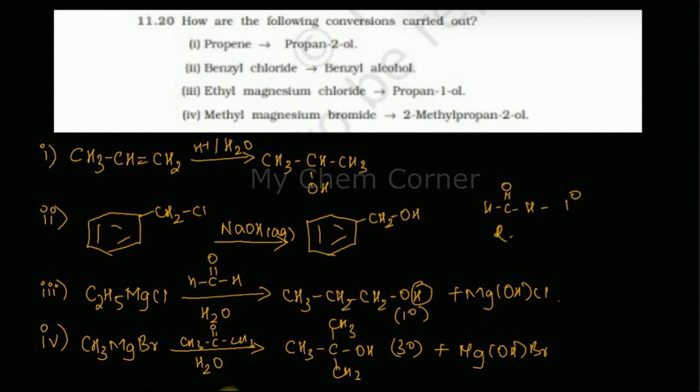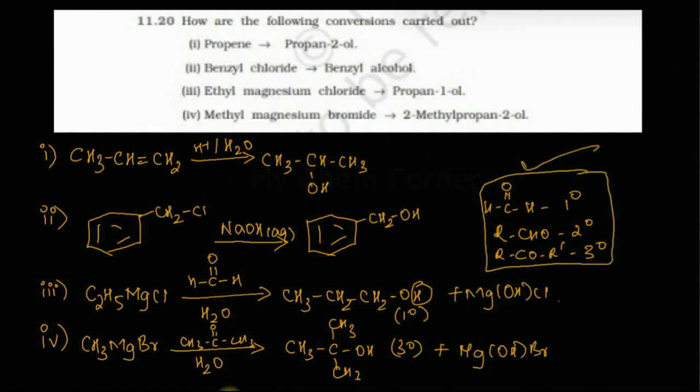Whenever you do this with formaldehyde you will get primary alcohol, with an aldehyde you will get a secondary alcohol, and with the ketone you will get a tertiary alcohol. If you know this when you react it with a Grignard's reagent, then it's easy for you to write such kind of equations.